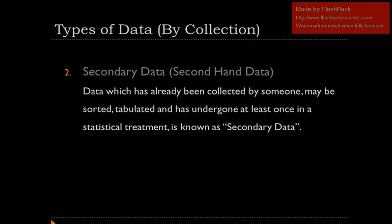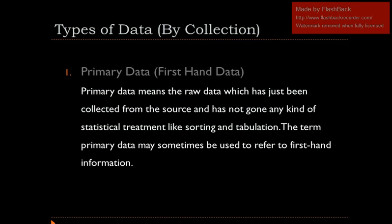Our next definition is secondary data. Secondary data is called second-hand data. Secondary data is the data which has already been collected by someone else. This data may have been sorted or tabulated — sorting and tabulation are statistical methods. So secondary data has undergone at least once a statistical treatment. If data has any statistical treatment applied, it means it is secondary data.